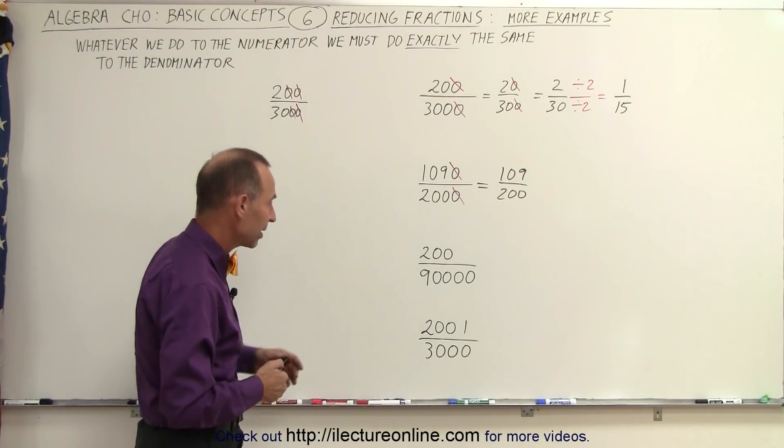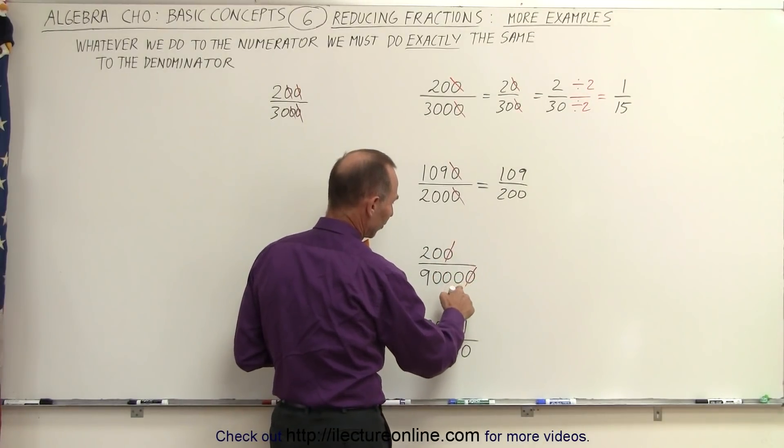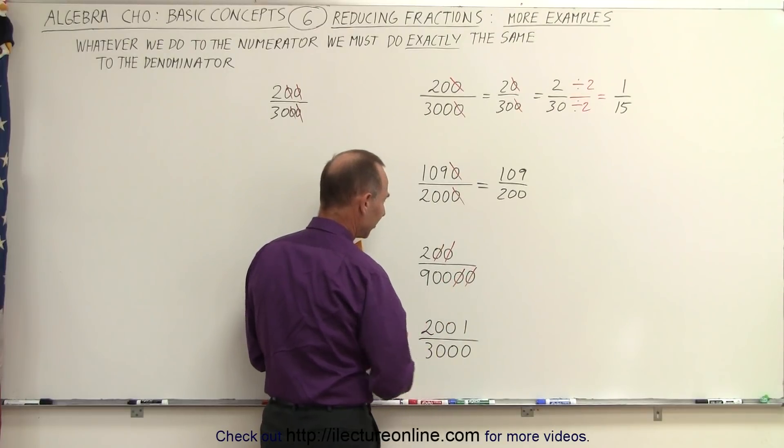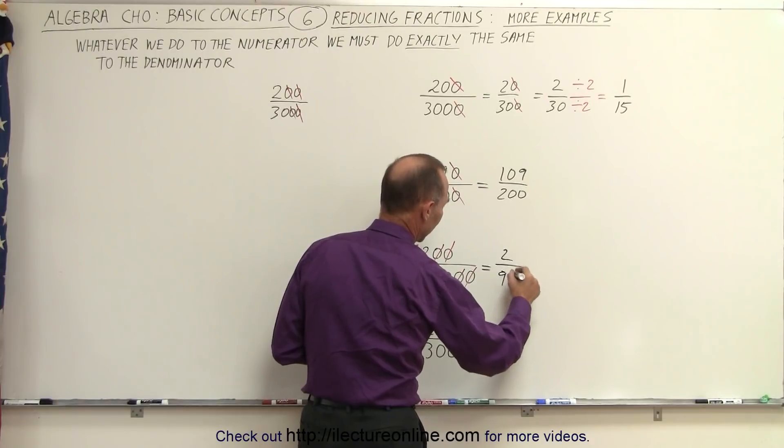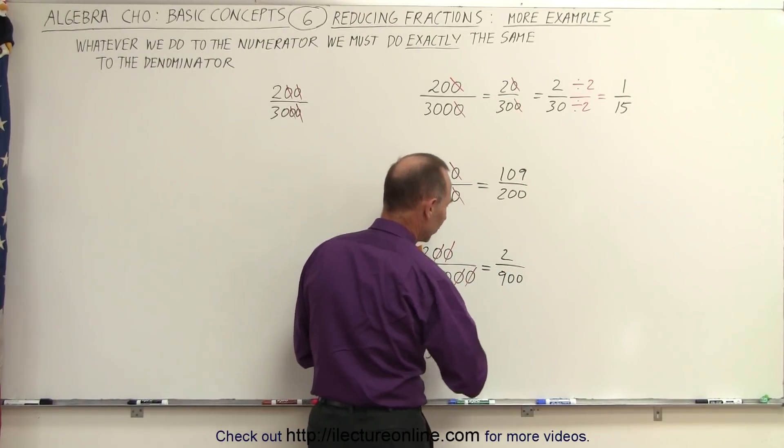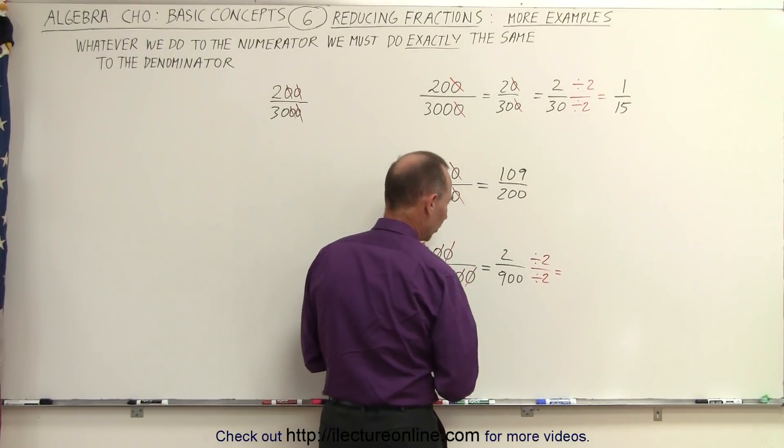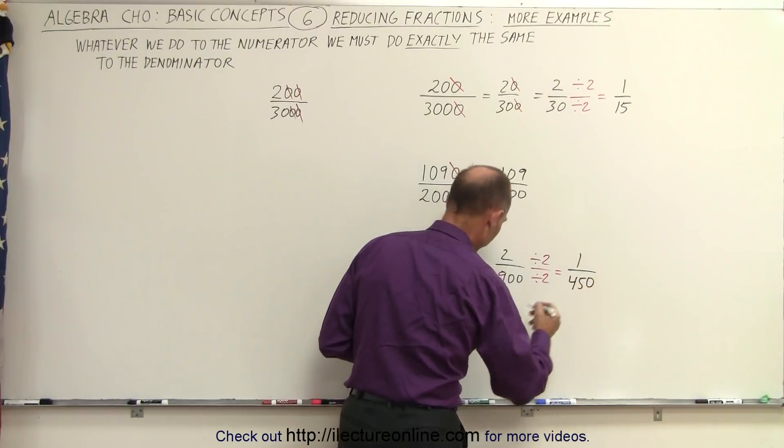If you take a look at here, again, we can apply what we used before. We can divide by 10, and then there's still a 0 at the end. We can divide by 10 again. And so here, this ends up being 2 divided by 900. And since they're both even, you can then divide both by the number 2. And so this becomes 1 divided by 450, or 1 over 450.